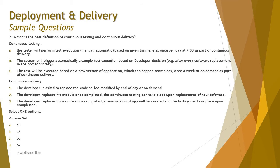Moving to question 2, which is a scenario-based map-the-following question. Which is the best definition of continuous testing and continuous delivery? For continuous testing, the options are: A — the tester performs test execution, manual or automatic, based on a given timing, such as once per day at 07:00 hours, as part of continuous delivery. B — the system automatically triggers a sample test execution based on developer decision after every software replacement in the project library. C — tests are executed based on a new version of the application, which can happen once a day, once a week, or on demand as part of continuous delivery.